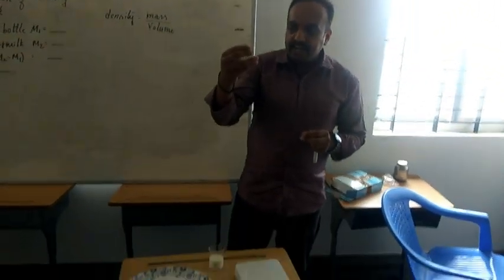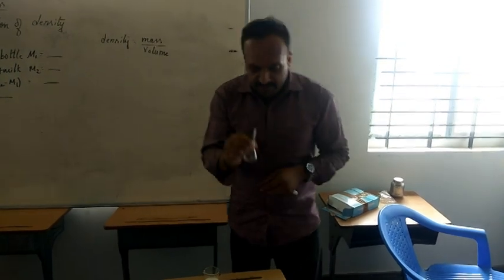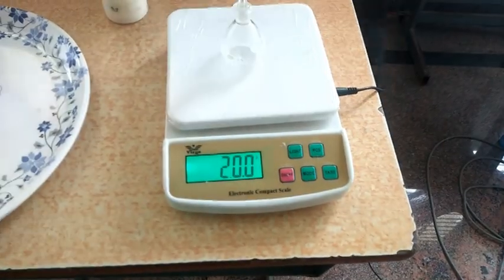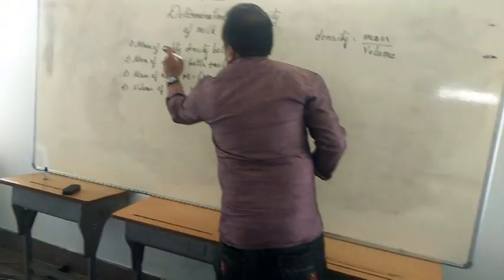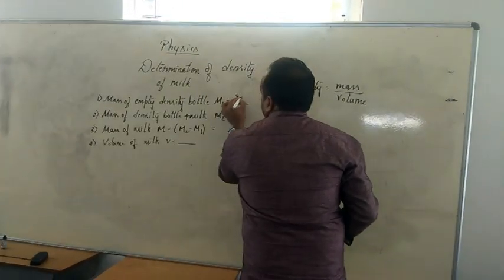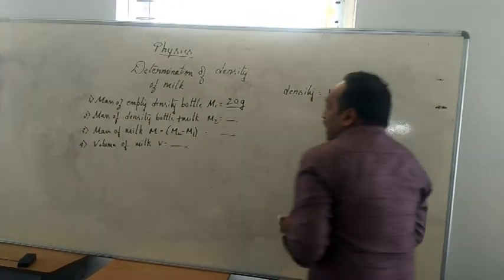we need to take a dry density bottle and we are going to measure. Let me mark it. Mass of empty density bottle is 20 grams.